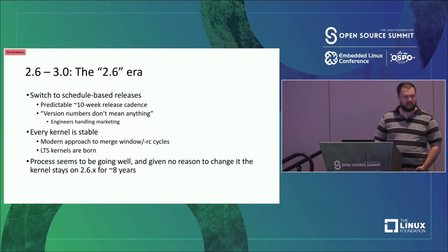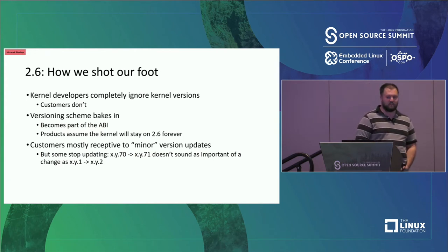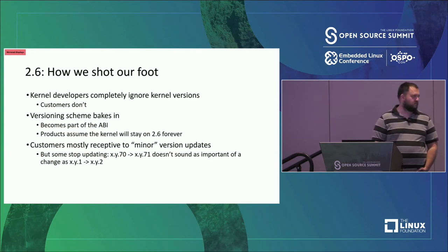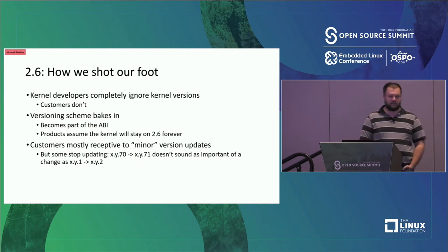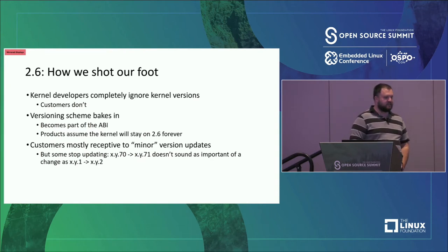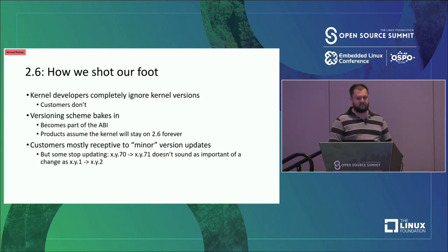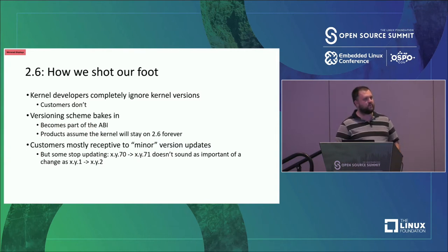This worked incredibly well — the kernel was on a 2.6.something version for eight years. However, we messed it up a little because we changed how we do releases but didn't change our versioning scheme or sell it well to users and customers. We told them to ignore versions, but the version number is still there and customers still assume it means something. When the kernel wanted to move from 2.6 to 3.0, some users had baked in the assumption that 2.6 would be around forever.